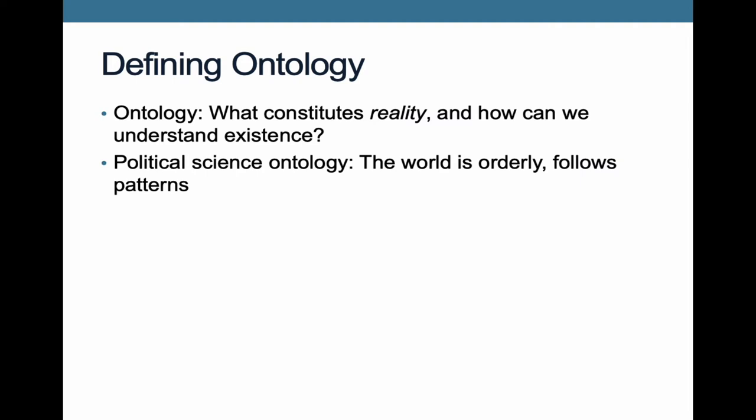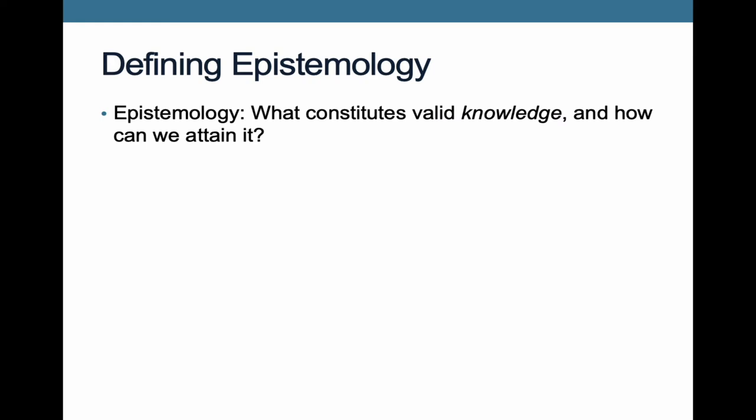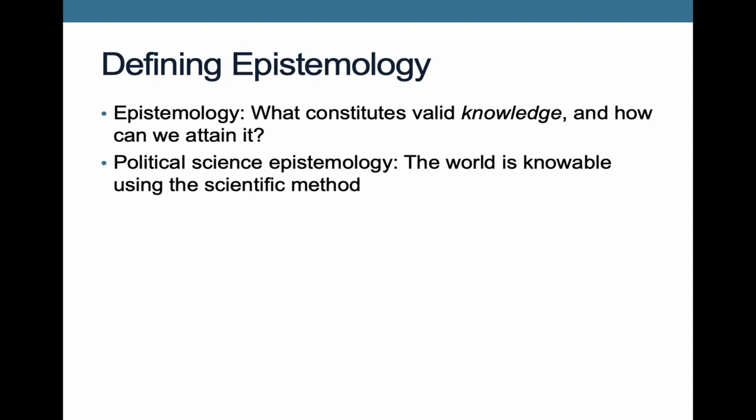This leads us to epistemology. Epistemology asks the question of what constitutes valid knowledge and how do we attain it? Whereas ontology is about how orderly and patterned the world is — and in political science we think it is orderly and patterned — epistemology is more about us as human beings: how are we capable of understanding this order? In political science, we have an epistemology that says the world is knowable using the scientific method and social science. This means that evidence can be collected, that this evidence is objective, attainable, and that we are able to collect reliable and valid data.